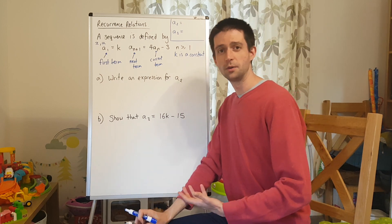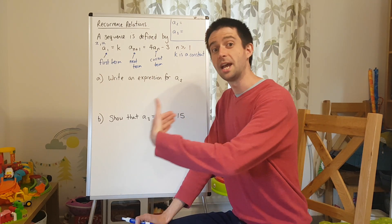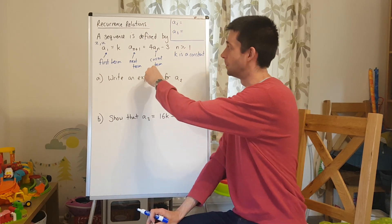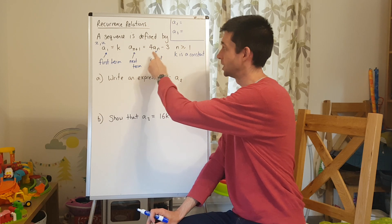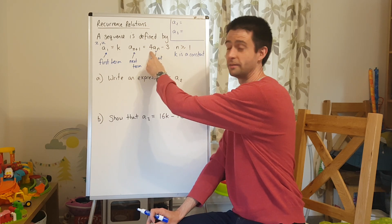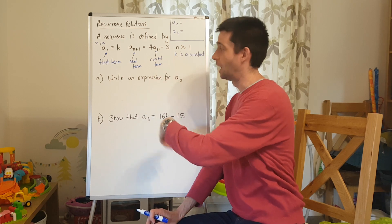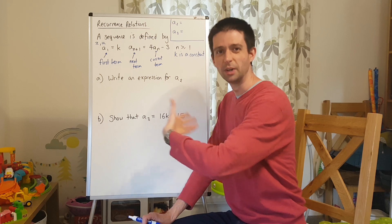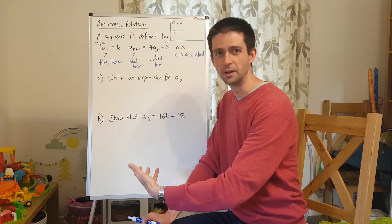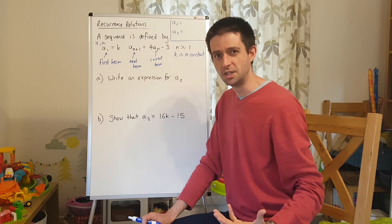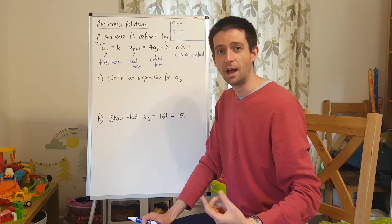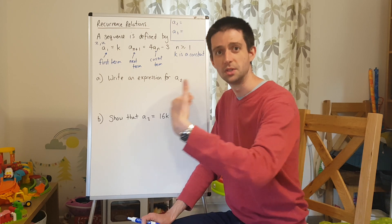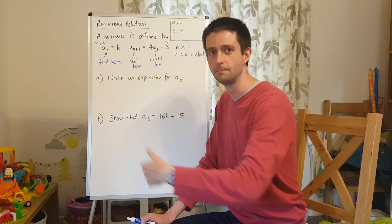A recurrence relation is a rule for getting to the next term in a sequence from the one that you're currently on. So this one here — to get to the next term in the sequence, you would multiply the current term by 4 and then subtract 3. You keep doing that to get to the next term, hence recurrence — recurring — you're doing the same thing over and over. You may have come across this at GCSE, where it was called iteration. An iteration is something we do in maths when we mean we're doing the same thing time and time again.